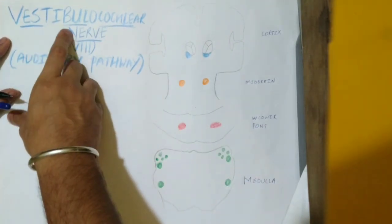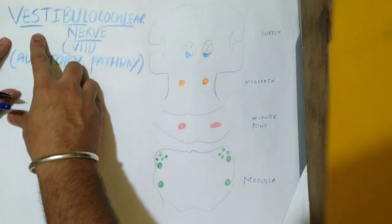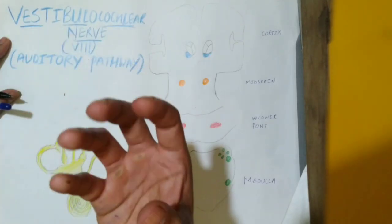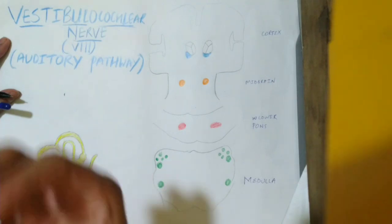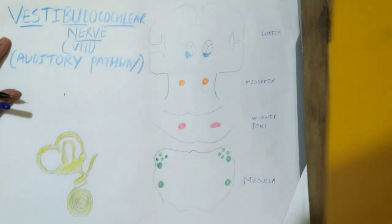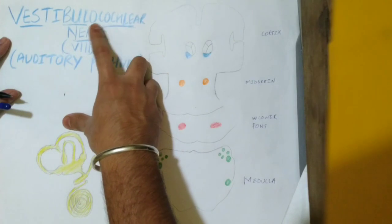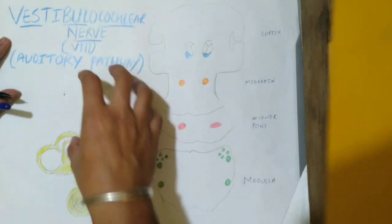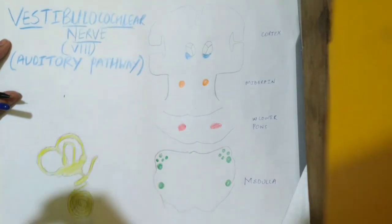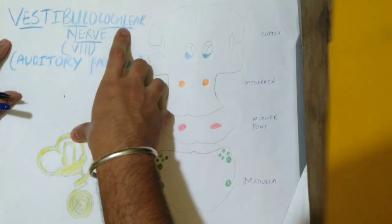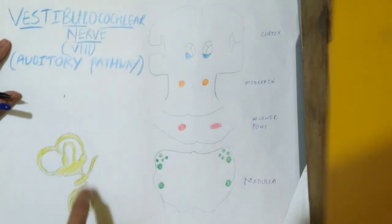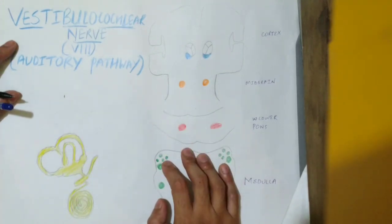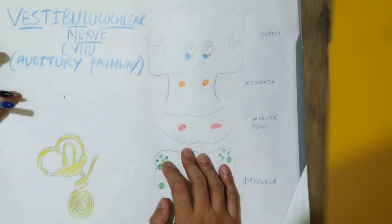It is concerned with two functions. First, by the name it is clear that vestibulo is concerned with static balance. The parts of ear concerned with this function — static balance — are utricle and saccule. The cochlear part is concerned with hearing, auditory impulses. This is done by the part of ear called the organ of Corti or cochlea. It is a sensory nerve with three neurons.